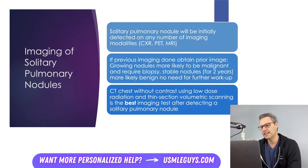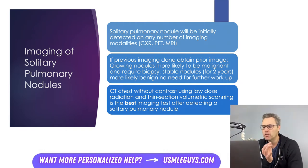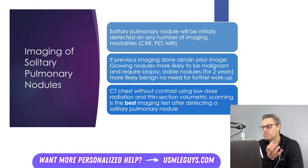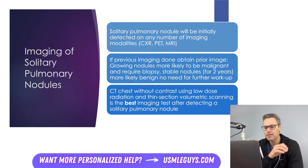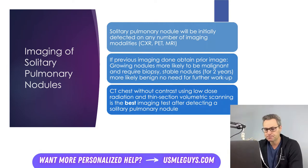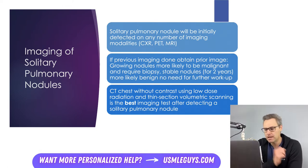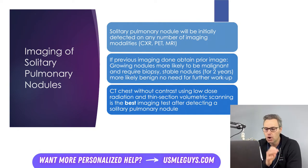Solitary pulmonary nodules will initially be seen on some sort of imaging. If the patient has previous imaging done, we always want to obtain those images to see if the nodule was previously identified, because growing nodules are more likely to be malignant and should be biopsied. If a nodule has been stable in size for two years, it's more likely benign and no further workup is needed. If there's no prior imaging — which is common — your next best step is to get a chest CT without contrast using a low radiation dose.